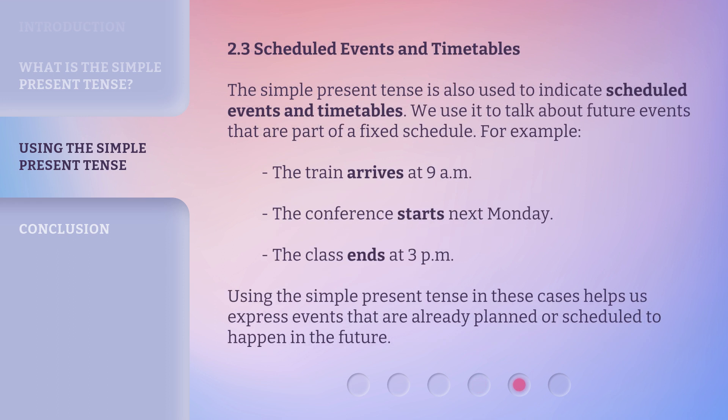2.3 Scheduled Events and Timetables. The simple present tense is also used to indicate scheduled events and timetables. We use it to talk about future events that are part of a fixed schedule. For example: The train arrives at 9 a.m. The conference starts next Monday. The class ends at 3 p.m. Using the simple present tense in these cases helps us express events that are already planned or scheduled to happen in the future.